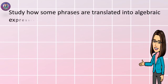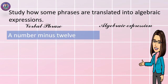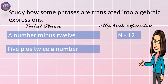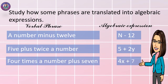Study how some phrases are translated into algebraic expressions. A number minus 12 — that is A minus 12 in algebraic expression. Next: 5 plus twice a number — that is 5 plus 2y. Another one: 4 times a number plus 7 — that is 4x plus 7.